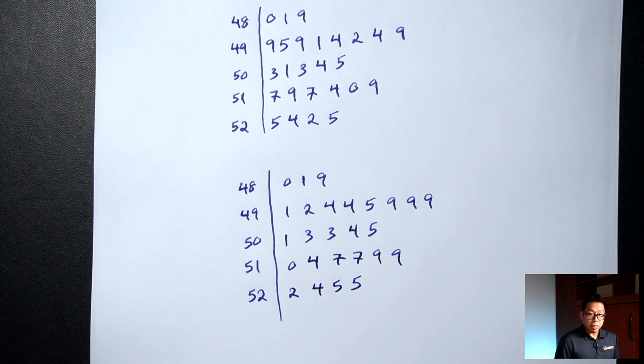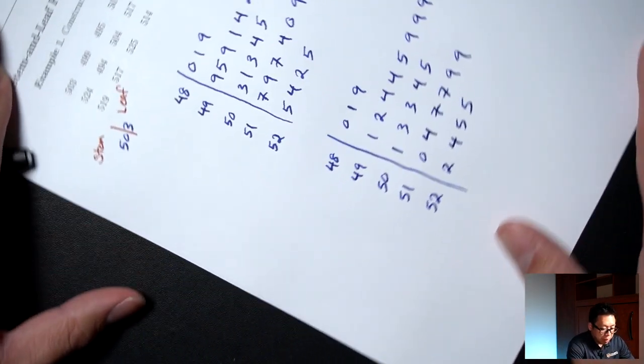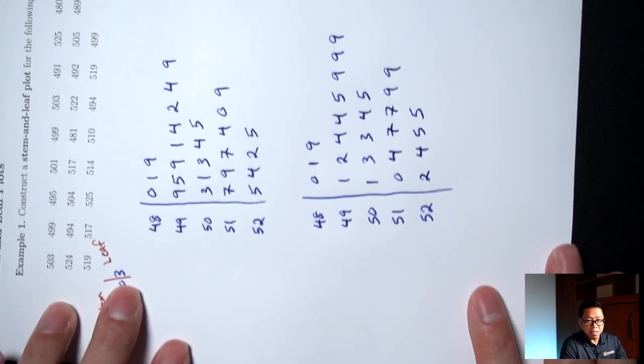And finally for the 52 stem: 2, 4, 5, 5. And that's how you make a Stem and Leaf Plot. If you turn it sideways it basically looks like a histogram.